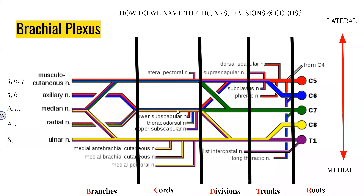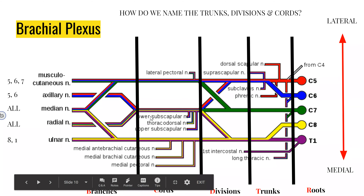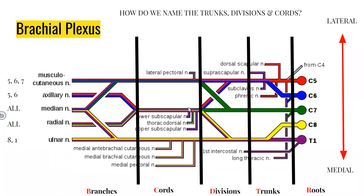Now looking at our cords — the naming is a bit tricky at first. We've got lateral, medial, and posterior cords. These terms are relative to the axillary artery. Imagine the posterior cord is further back, with an artery sitting in the space in front. That means the lateral cord is lateral to the artery, medial cord is medial to the artery, and the posterior cord is posterior to the axillary artery.